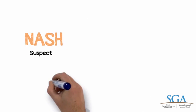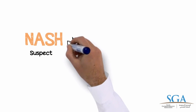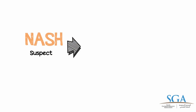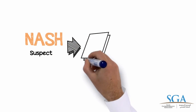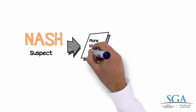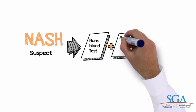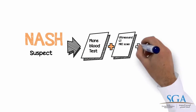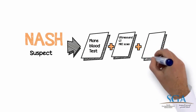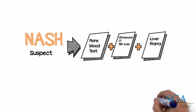The diagnosis may be confirmed with a right upper quadrant ultrasound examination. It is important that you know that if your doctor or nurse suspects that you have NASH, you will likely have more blood tests, an imaging test of the liver such as an ultrasound, CT, or MRI scan, and a liver biopsy.